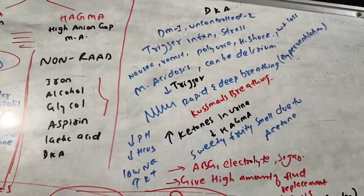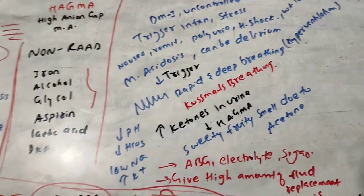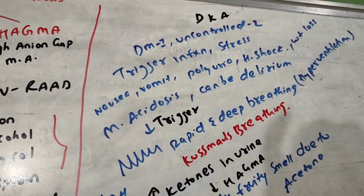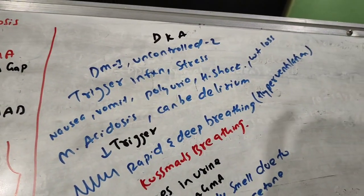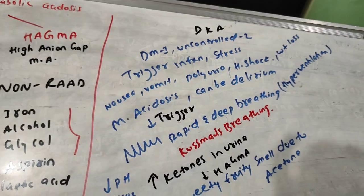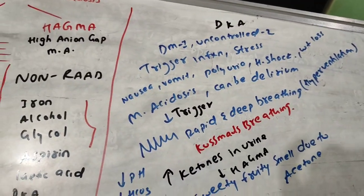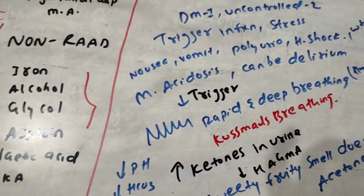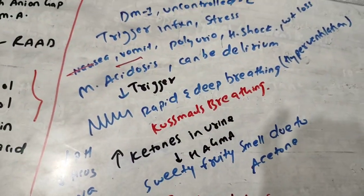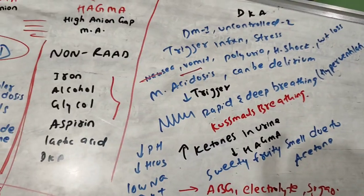Next, DKA — Diabetic Ketoacidosis — is the most common complication of Type 1 diabetes, though it can also occur in uncontrolled Type 2. Triggering factors include infections, stress, inflammation, and intoxication. Symptoms include nausea, vomiting, polyuria, hypovolemic shock, dehydration, and weight loss. ABG shows metabolic acidosis.